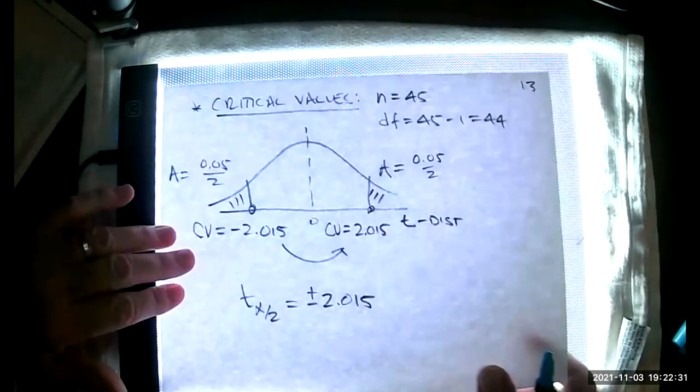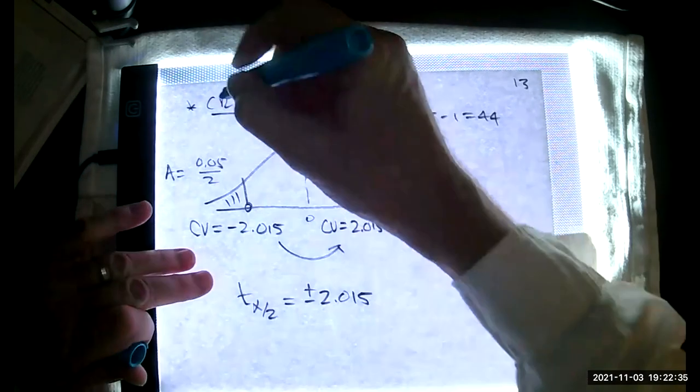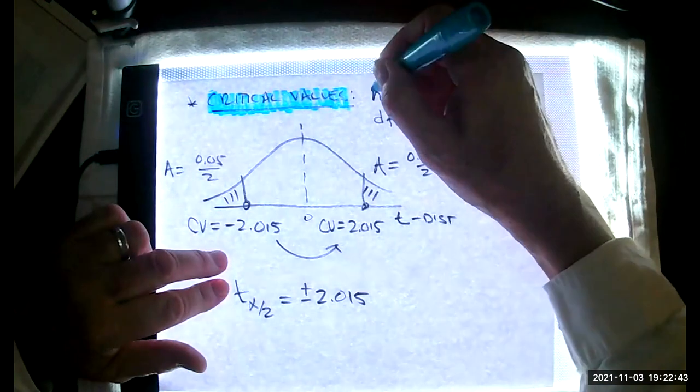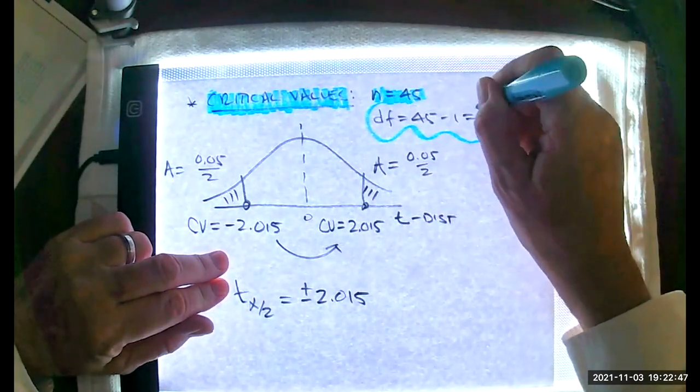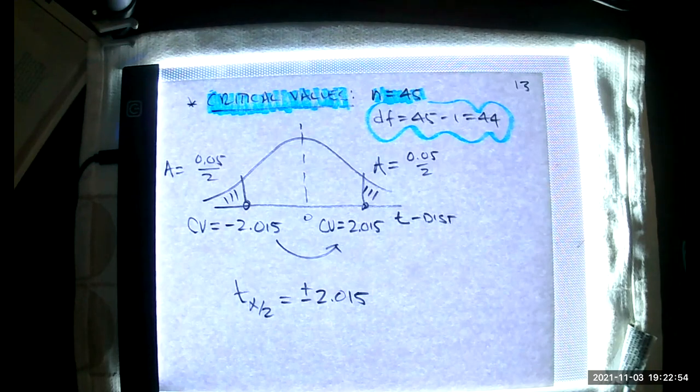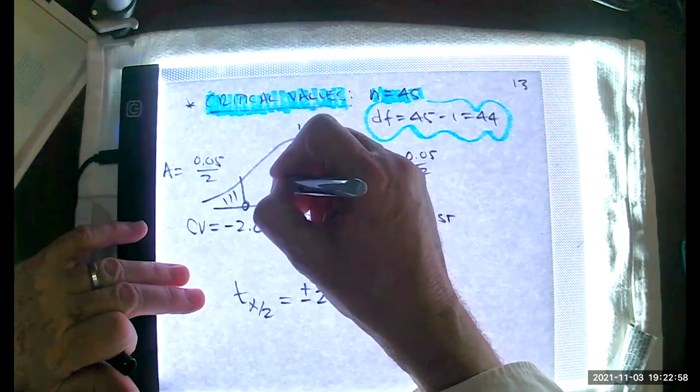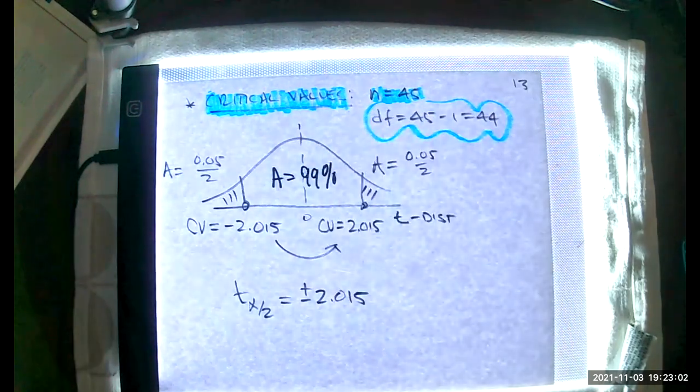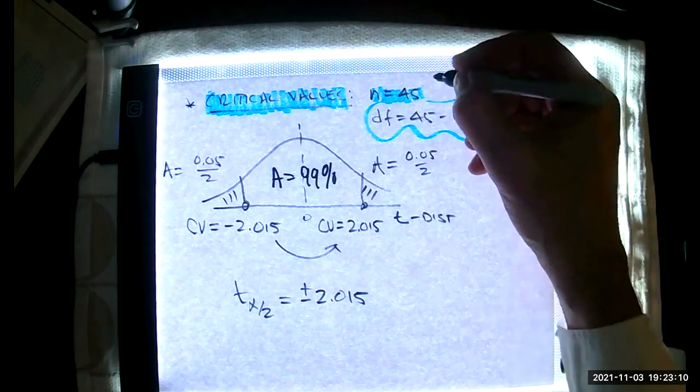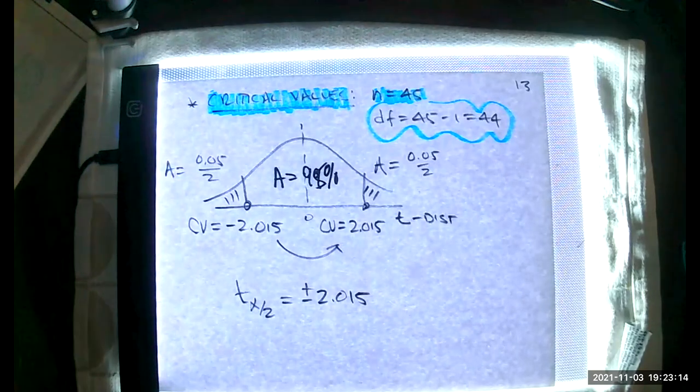The requirements to construct the confidence interval are that we have a simple random sample and either a sample size of greater than 30 or a normal distribution. Since our sample size is 45, we're good to go. I'm going to run through this just a single time using the formulas, and then we'll take a look at the calculator. The first thing I do is I look after the critical values. I'm going to jump over to my calculator and run you through the keystrokes. For the critical values, it's the T distribution with n equals 45. I have a degree of freedom of 44. We're constructing the 95% confidence interval. That means the area here in the middle is 95% of the area.